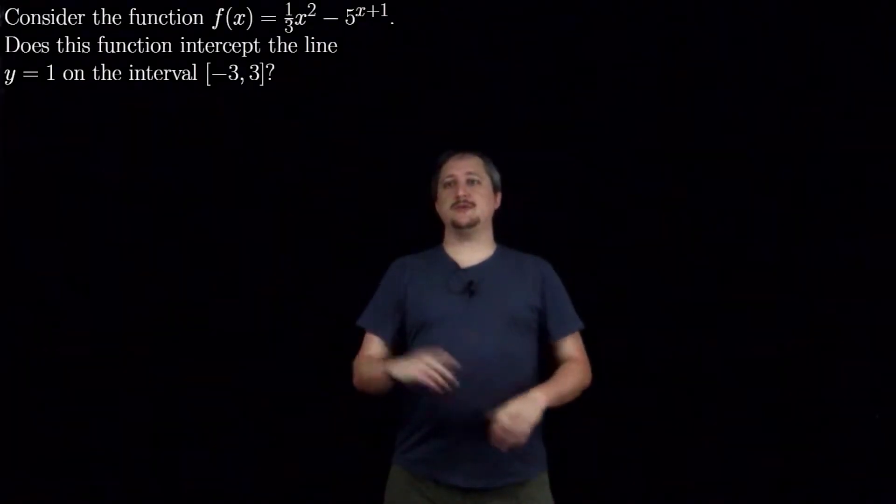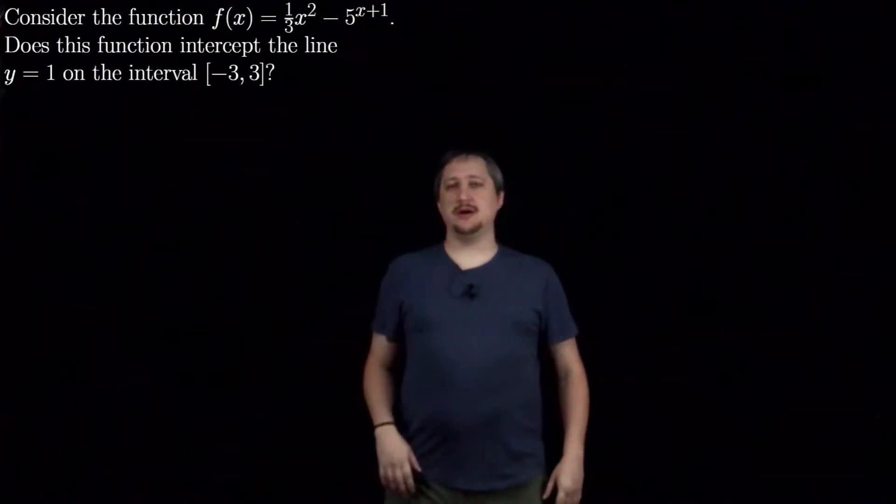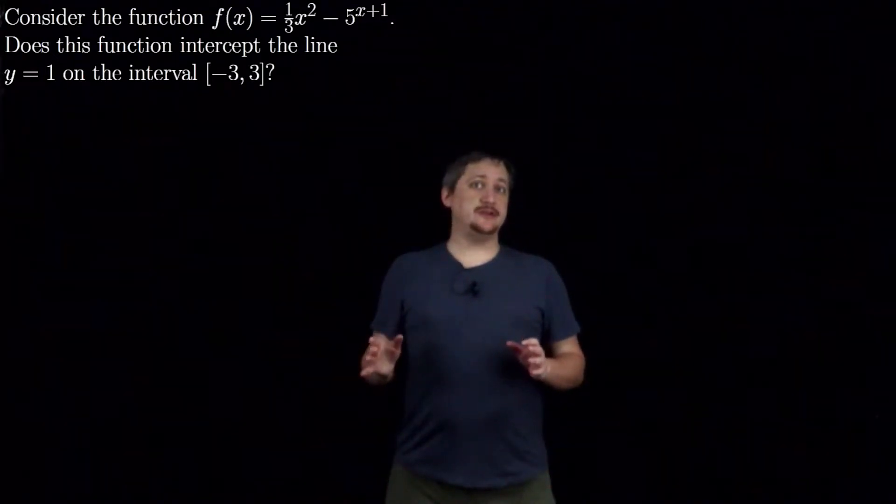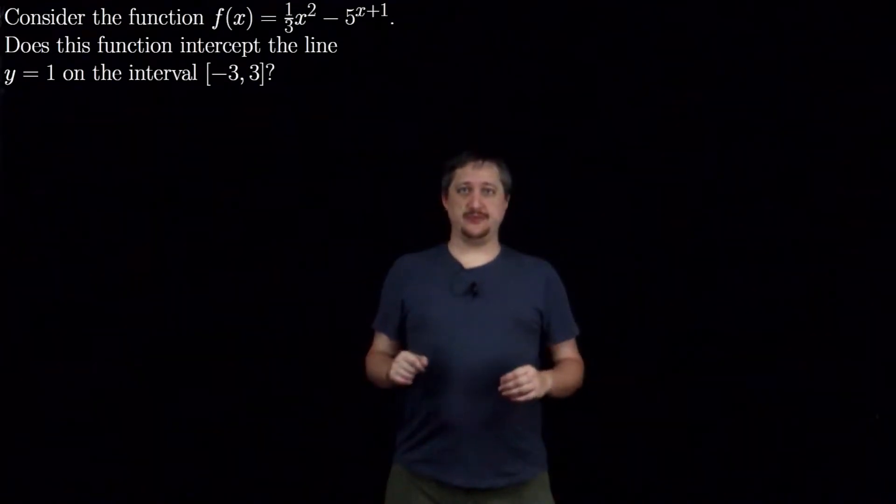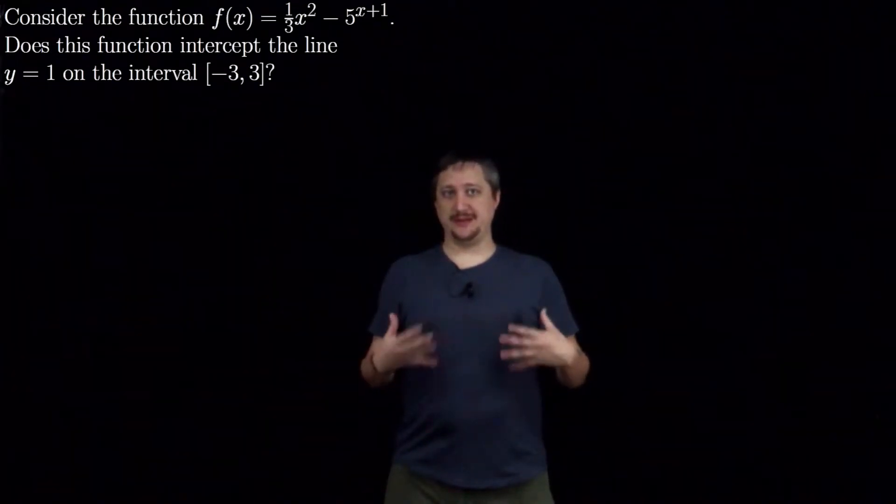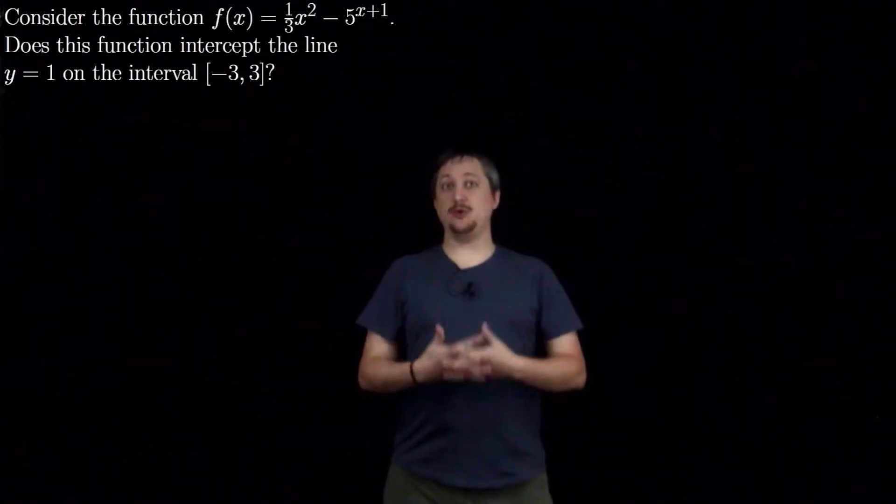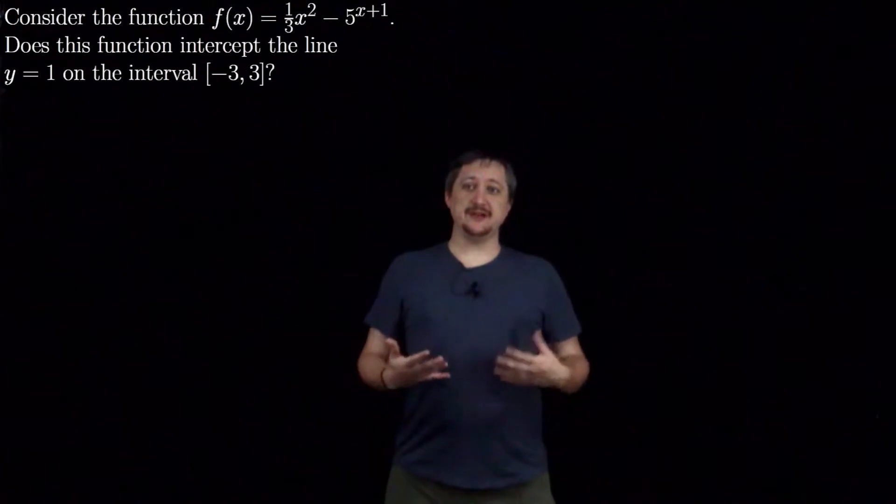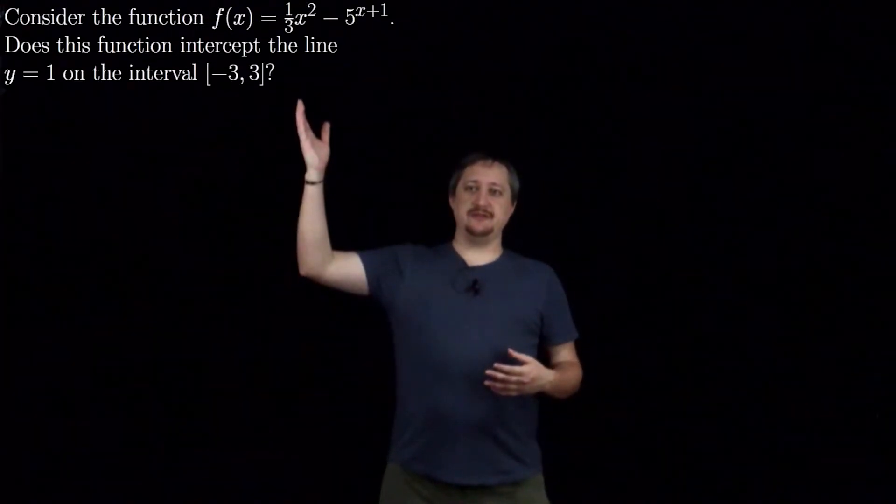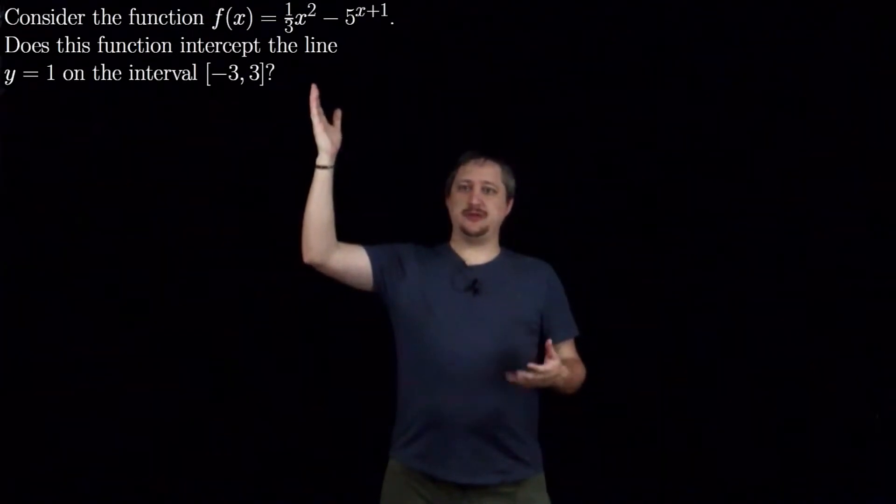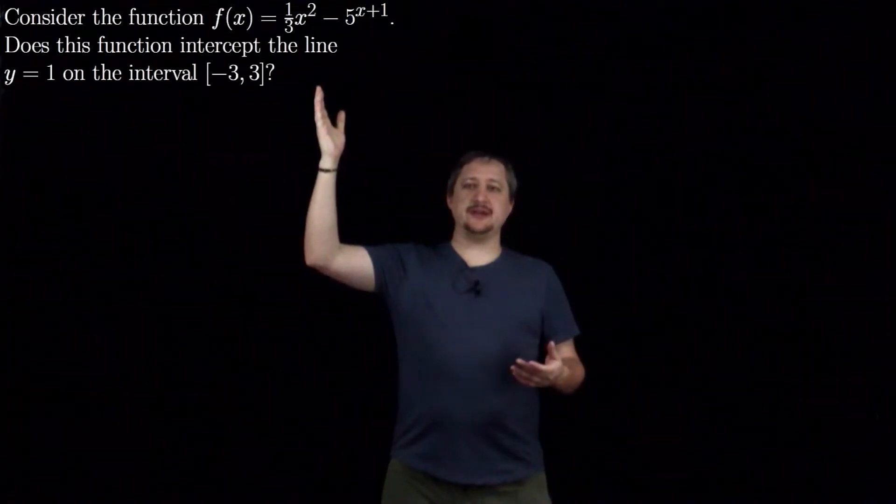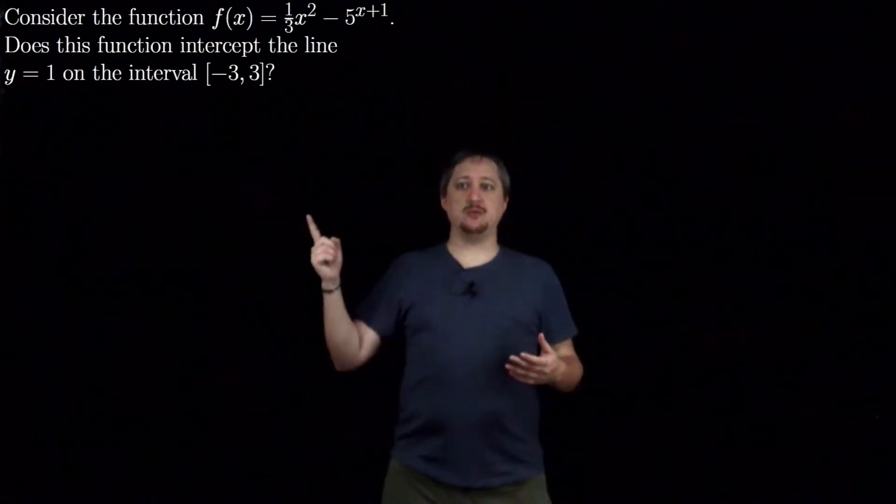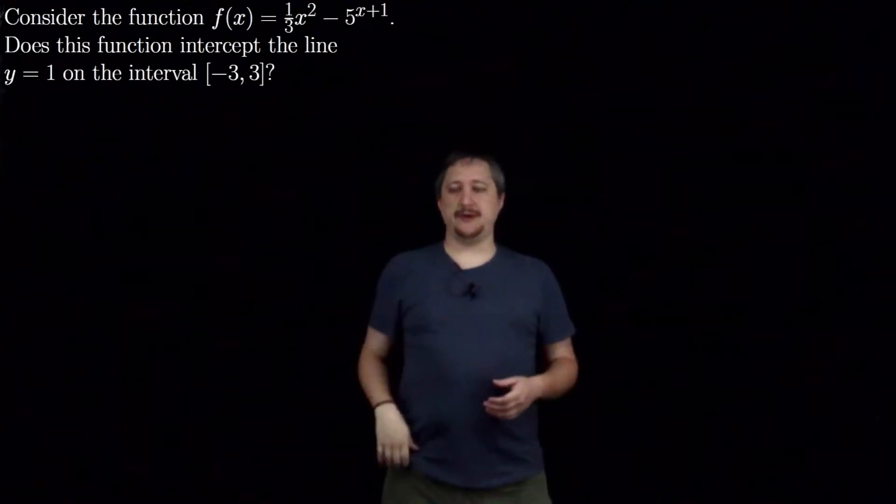Hello, so in this video we're looking at an example where it's not clear the particular thing we want to use. Part of this is explaining keywords or things to look out for to know the technique that we want to use. On the face of it, we're given this function f(x) = (1/3)x² - 5^x + 1 and we want to know if this intercepts the line y = 1 on the interval [-3, 3].